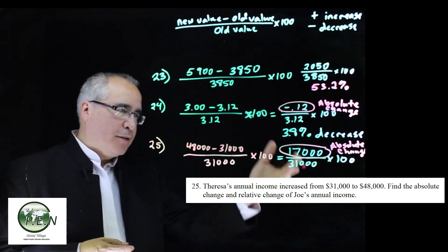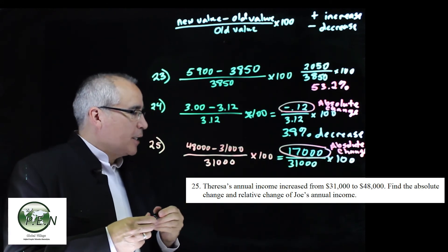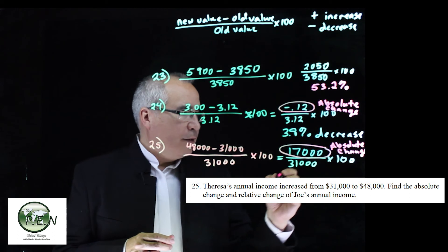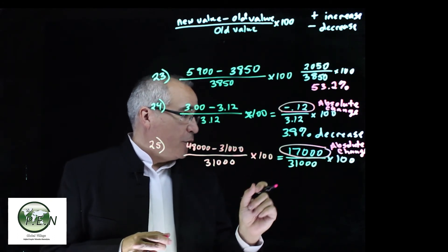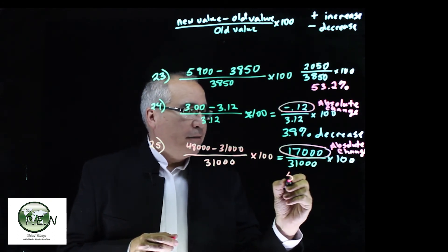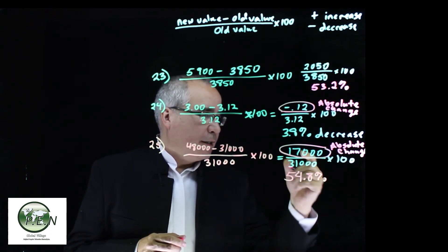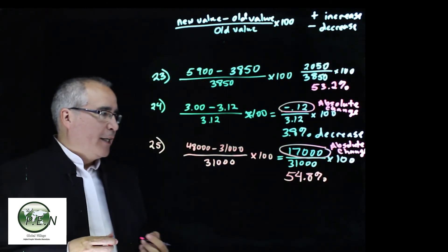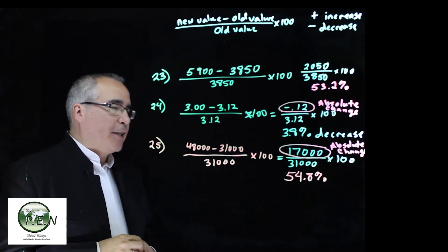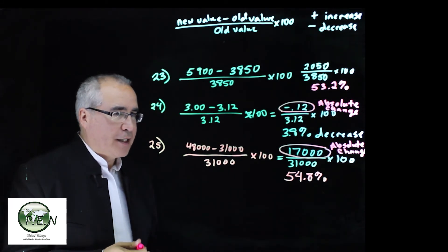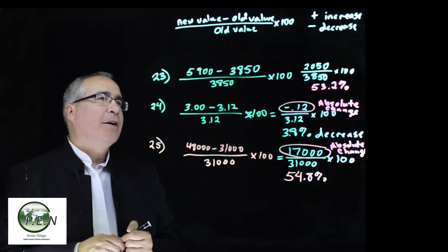And now we finish the division, multiplying by 100, and when we do that, we see that Joe, he had a 54.8% divide-multiply, that's his relative increase, the percent increase.